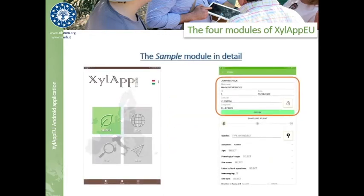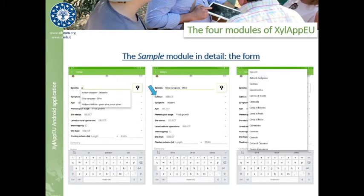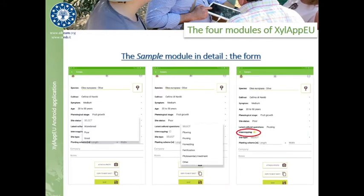The sampling form contains the information needed for the sampling procedure. Some fields are automatically provided by the device, like the team composition, the daily auto-incremental ID, the date, and the coordinates. Some information is to be typed by the user, such as the species, while other fields can be comfortably selected from a drop-down menu, like the cultivar and the symptom. The selection from a menu gives the highest contribution in speeding up the process of massive sampling, as well as checking an option from a checkbox, just like shown in the next slide with the field intercropping.